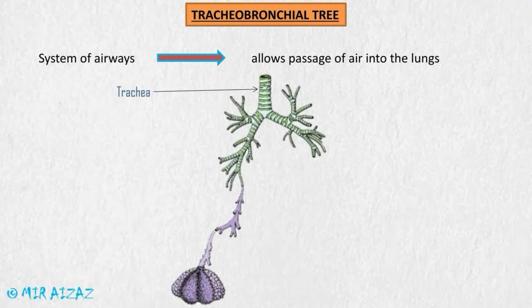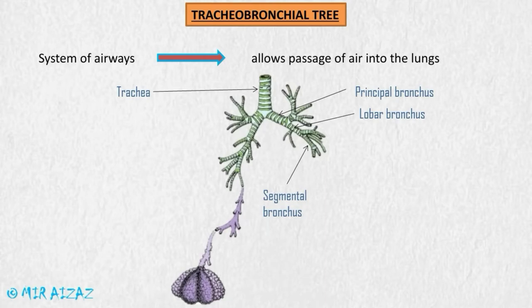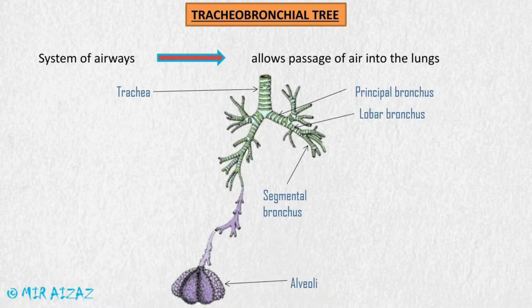The trachea, which is part of the lower respiratory system, starts after the pharynx and divides into two principal bronchi entering into each lung. Each principal bronchus divides into lobar bronchi entering into each lobe of the lung, and each lobar bronchus divides into segmental bronchi entering into different segments of the lung. These segmental bronchi continue to divide and finally give off smaller structures called the alveoli, where the actual exchange of gases takes place.